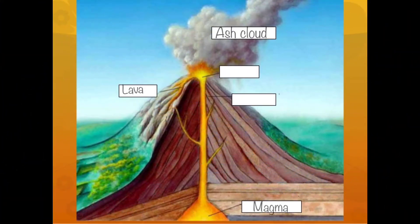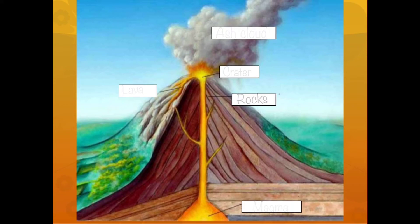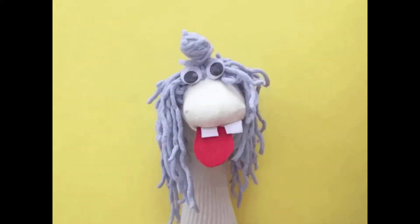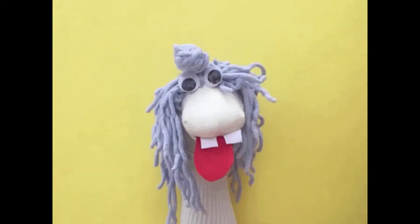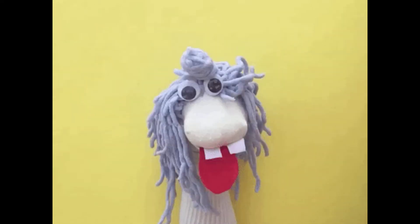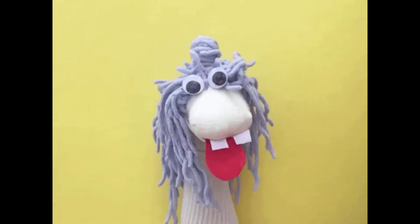There is a hole at the top of the volcano. It is like the mouth of the volcano and it is called the crater. All the brown and gray areas of the volcano are made up of rock. Okay children, now we have learned all the parts of the volcano.